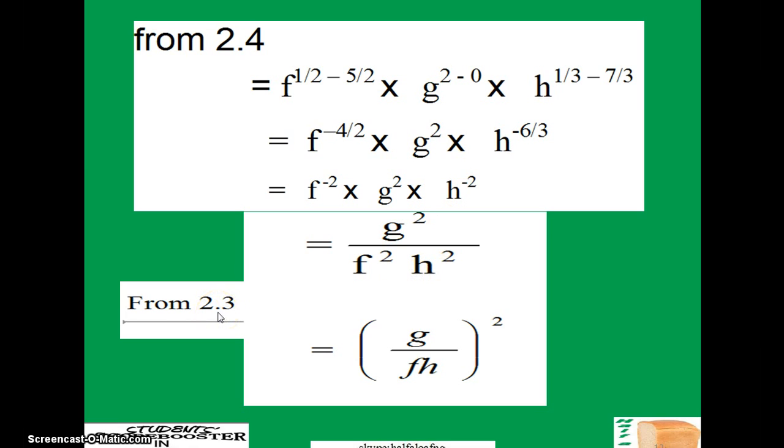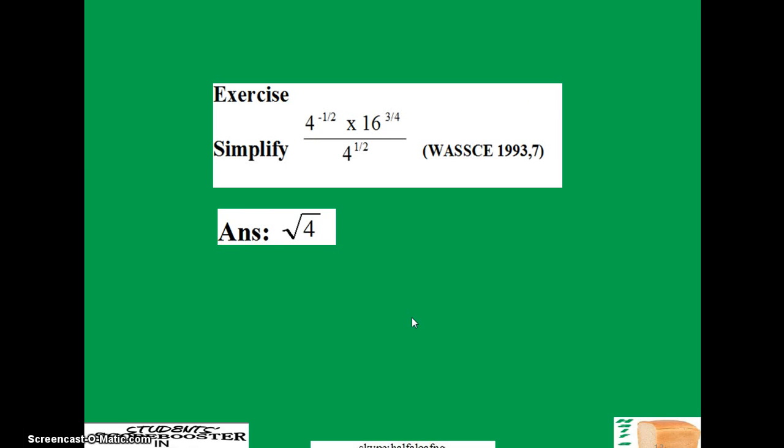From 2.3, you can put all of them in a bracket since they all have the same exponents, and that is your answer. So could you just try your hand on this one? Simplify. This is WASC 1993 question number 7 and your answer is this. Please just try and try your skill on this one and let's see if you are going to get the answer in 5 minutes.